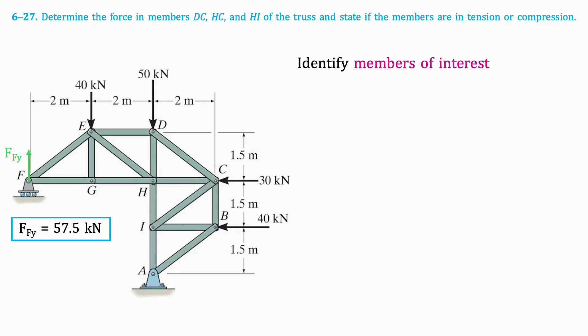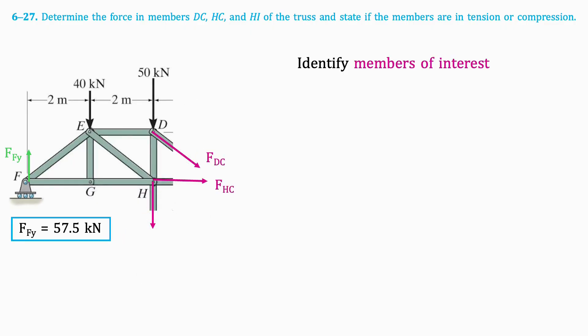Next, we'll identify the members of interest as highlighted in the question: DC, HC, and HI. We will cut the truss along these three members as shown and focus only on the remaining left side.